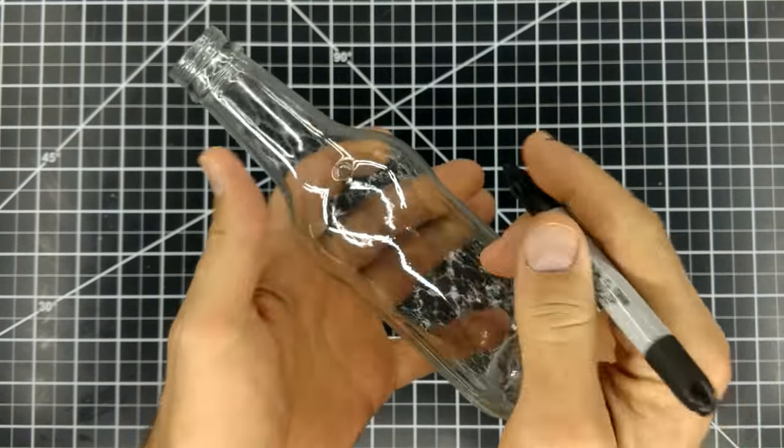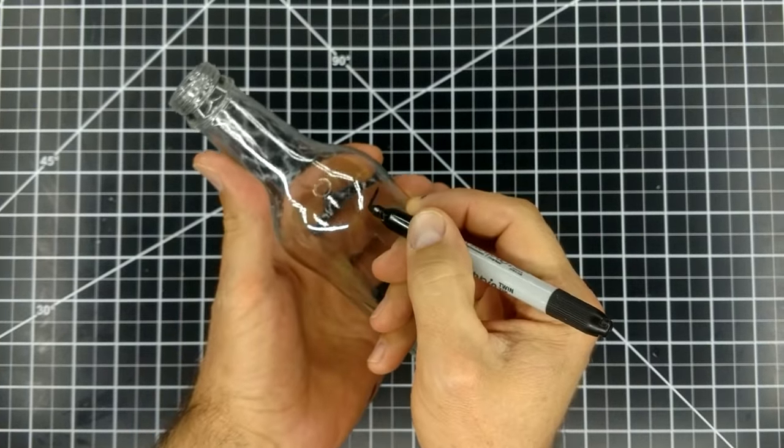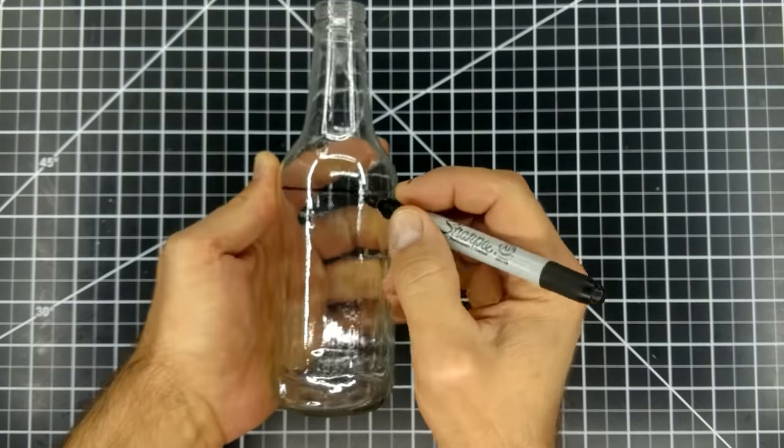In this video I'm going to show you how to cut custom shaped holes into a bottle using the same cutting method I used in my other videos.